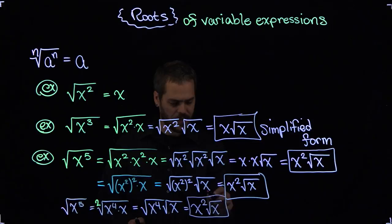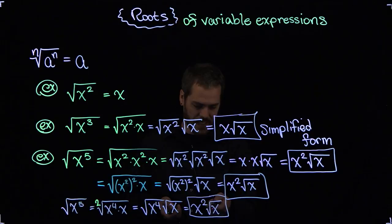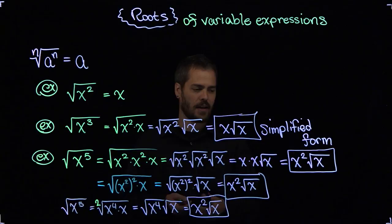How do you know when to leave it in there or when to do some other finagling? This is x to the first power. The index is a 2. The power on the inside is less than the index. So I'm going to leave it alone and call this the fully simplified form.